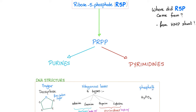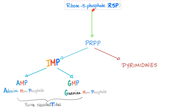De novo purine synthesis starts with ribose-5-phosphate, which comes from the HMP shunt — also known as the hexose monophosphate shunt or pentose phosphate shunt. Ribose-5-phosphate becomes PRPP, and then PRPP becomes purines or pyrimidines. Let's focus on purines.